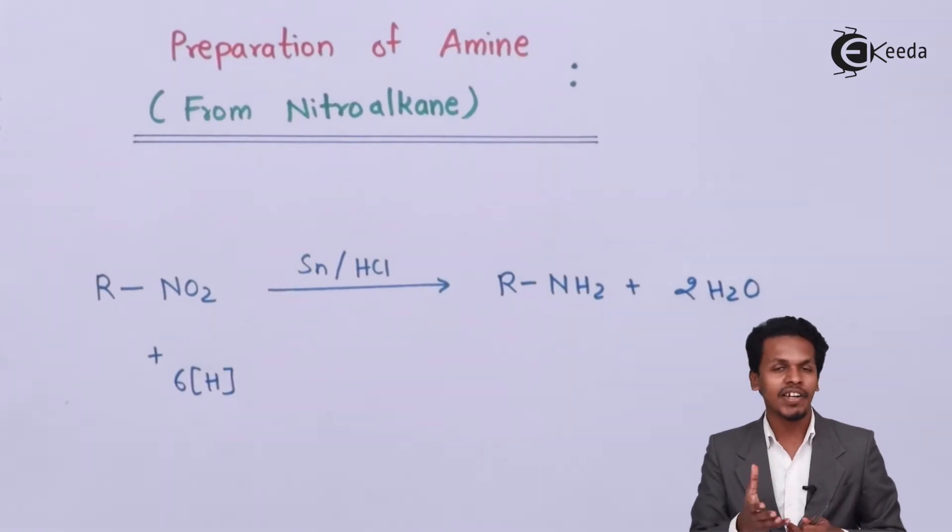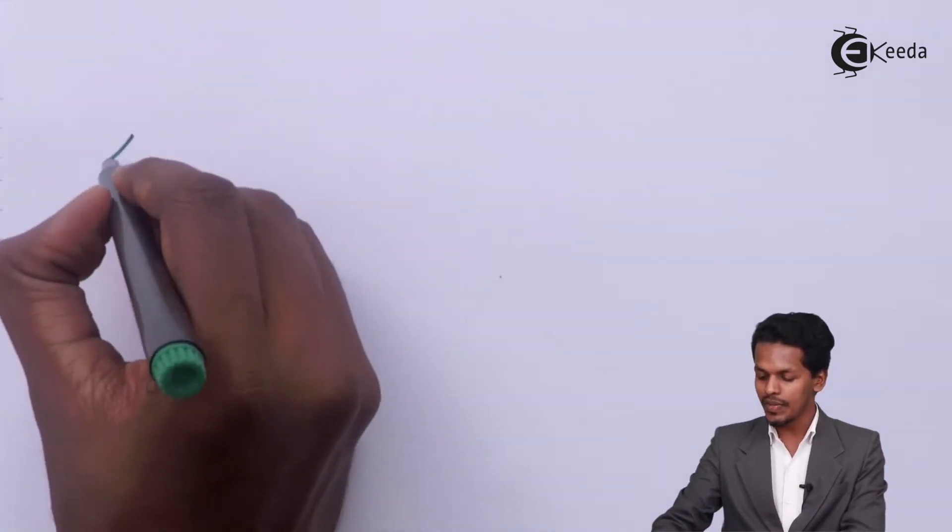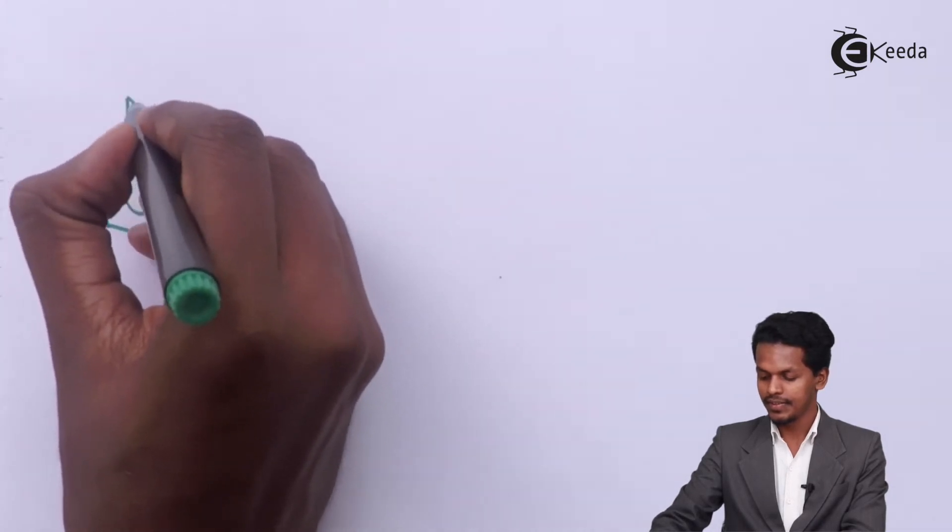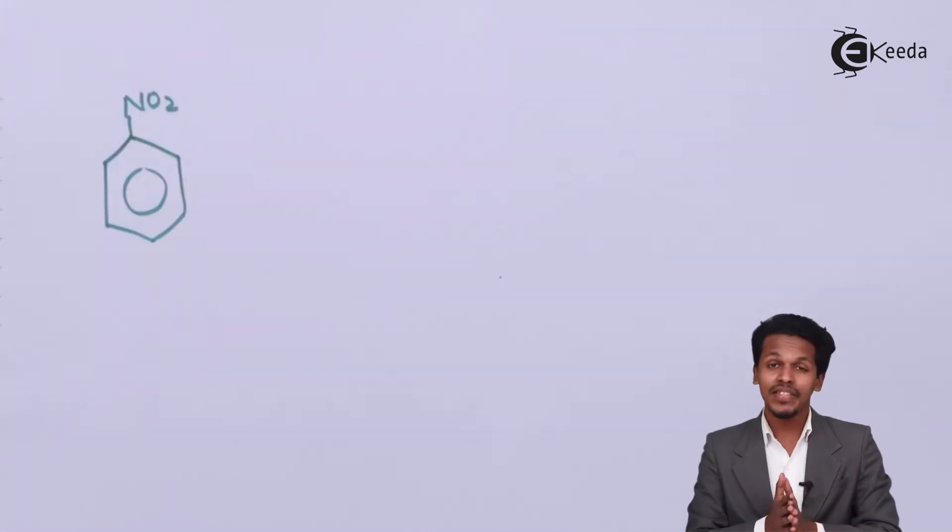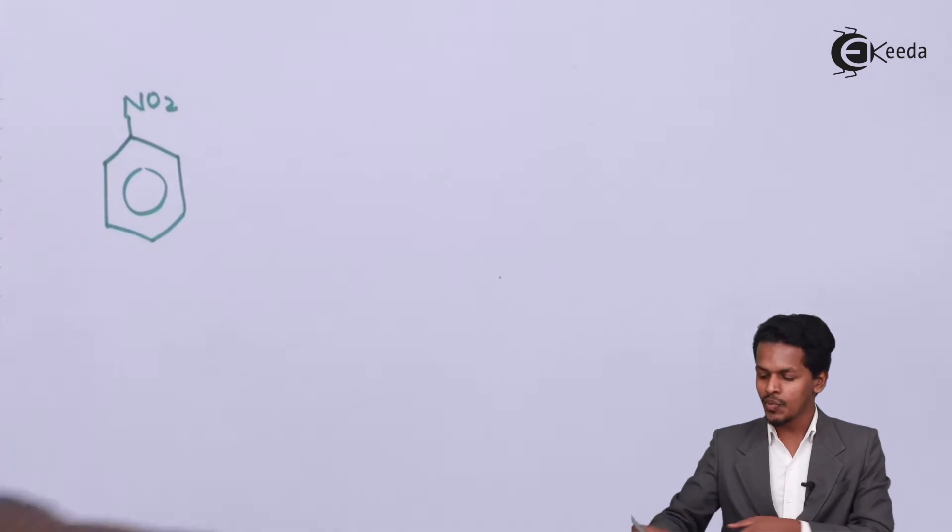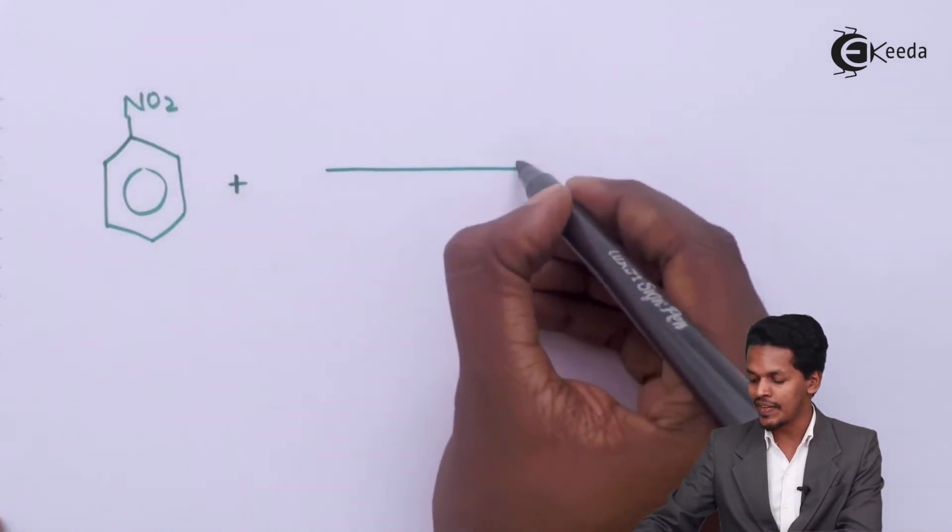So now let me give you an example related to this reaction. By this reaction we can also prepare aryl amines as well as aliphatic amines. So in this we are taking an example of nitrobenzene, and suppose if this reaction proceeds in presence of